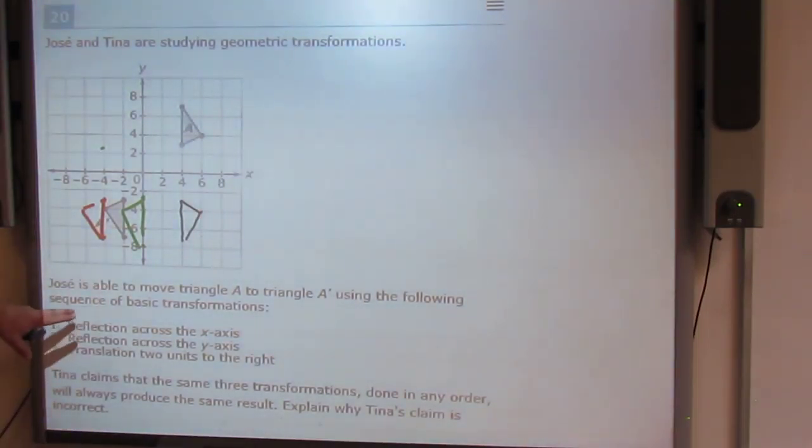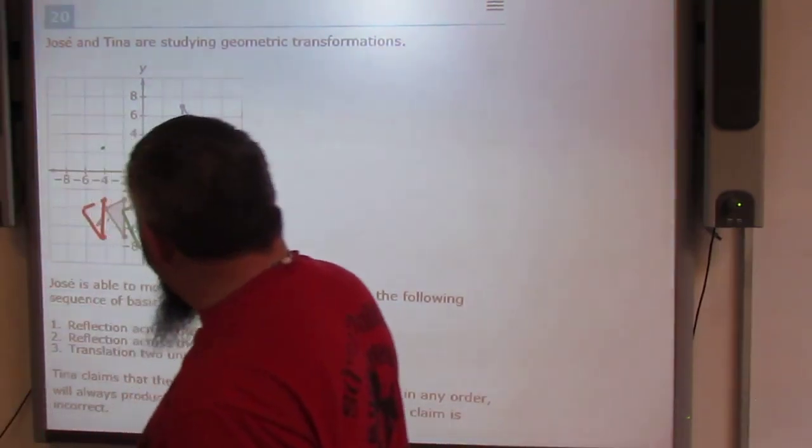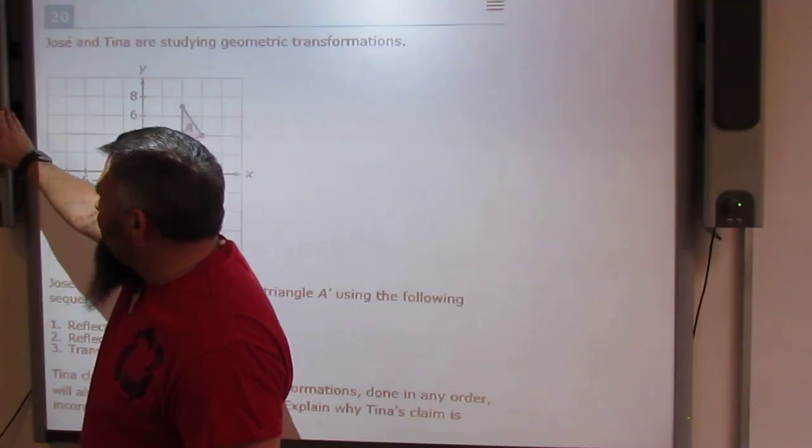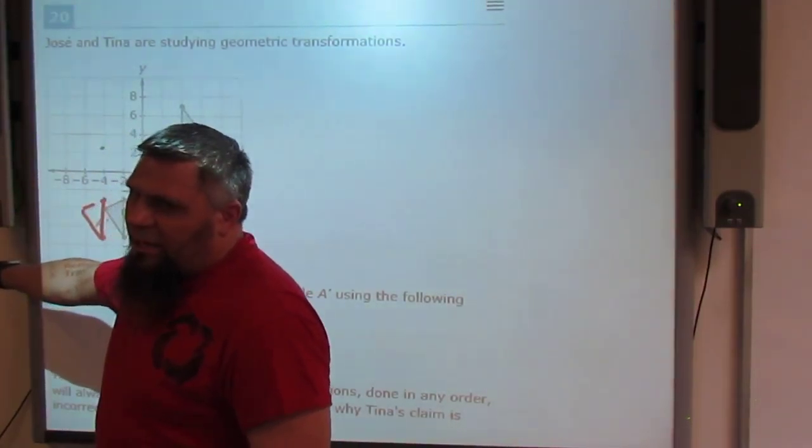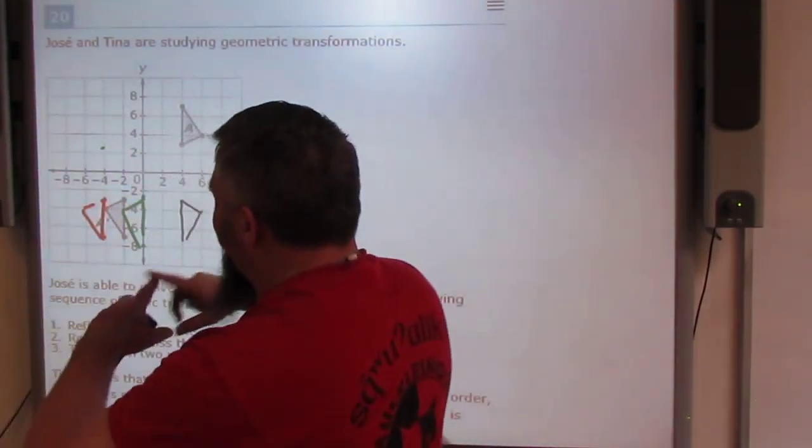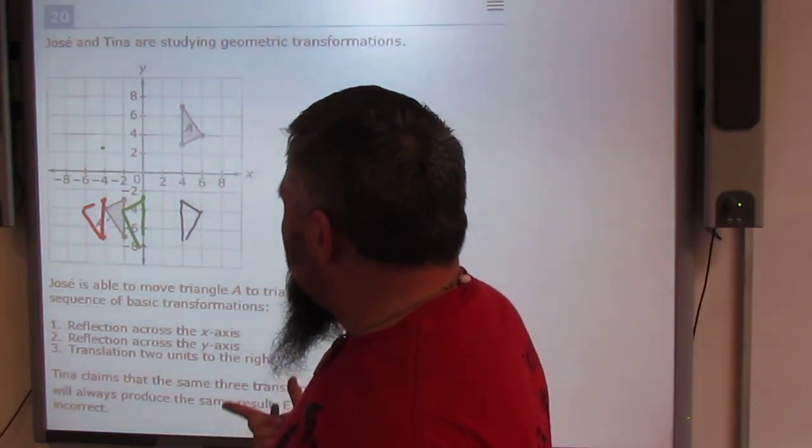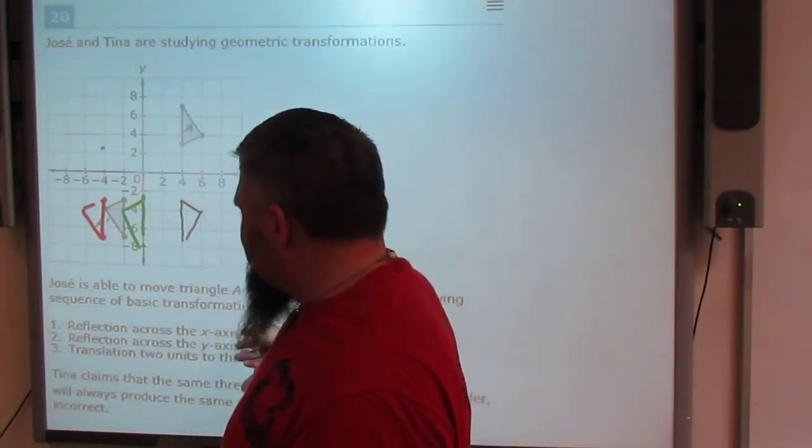What Jose is saying is, oh, no matter what you do, it will always land on it. But that's not true. If we translate first to right, then that's going to push us to right over here. Okay? It will not end up, it will end up further away from the x-axis than if we did these two, the reflections.